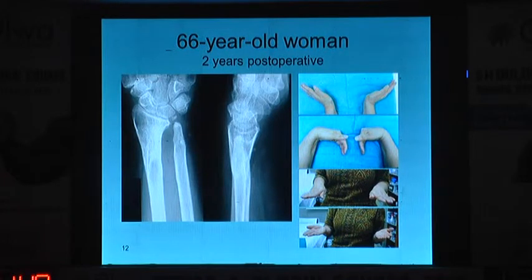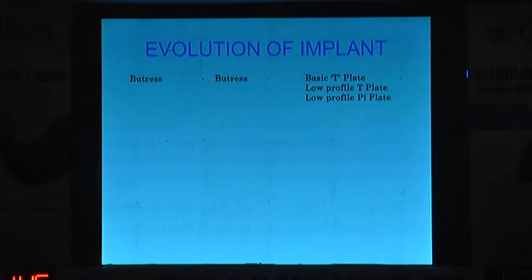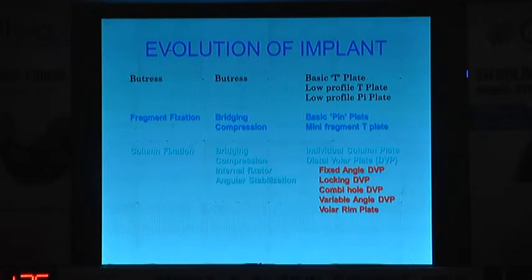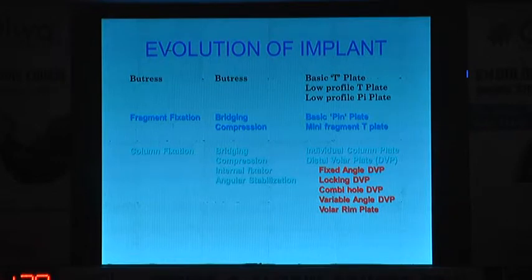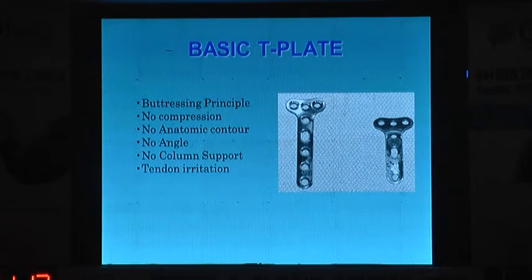So external fixation is not that it doesn't give good results, but in selected cases it is very effective. As for plates — plates started with the buttress plate. For a long time, almost three or four decades, we had the Ellis plate, which was key for distal radius fractures. Then came small plates for fragment-specific fixation — specifically for the small fragments, volar, dorsal, and radial plates. Then came locking plates, and when locking plates came into existence, things have changed.